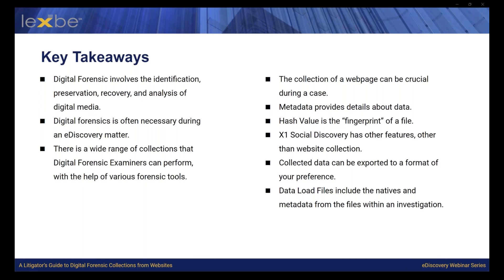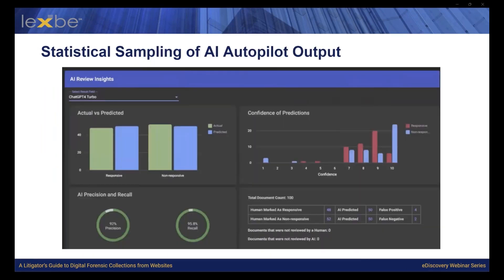Thanks, Asia. I appreciate those insights into forensic web collections. Now I'm going to take you through some specific GenAI use cases and how GenAI can help you navigate all of that website data while conducting a document review. I'll be showing you two Lexbe products: Lexbe Autopilot and Lexbe Copilot. At Lexbe we have a GenAI-powered document review service called Autopilot, where you can have document-intensive matters quickly analyzed by our GenAI large language models that will identify responsive versus non-responsive documents. It takes technology-assisted review to the next level because it doesn't require nearly as much training and it provides a confidence score and the rationale for each prediction.